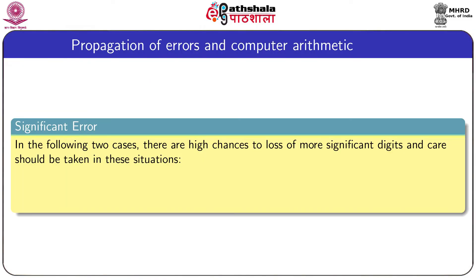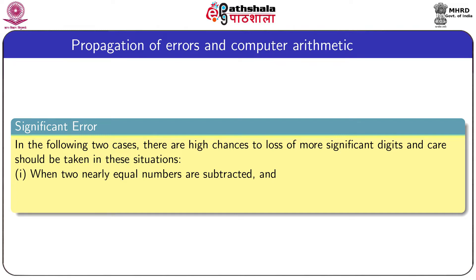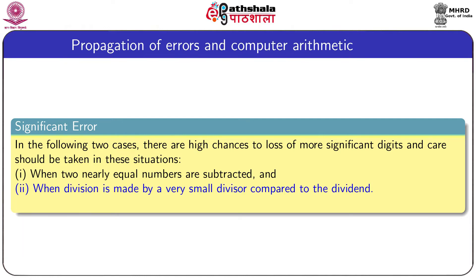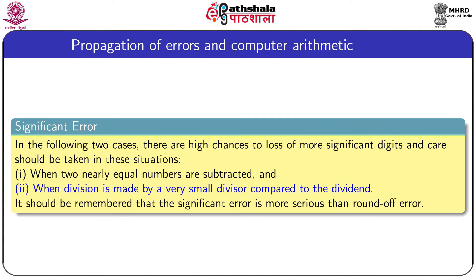There are two serious cases to consider during arithmetic operations. The first is when two nearly equal numbers are subtracted. The second is when division is made by a very small divisor compared to the dividend. It should be remembered that insignificant digits error is more serious than round-off error in these cases.